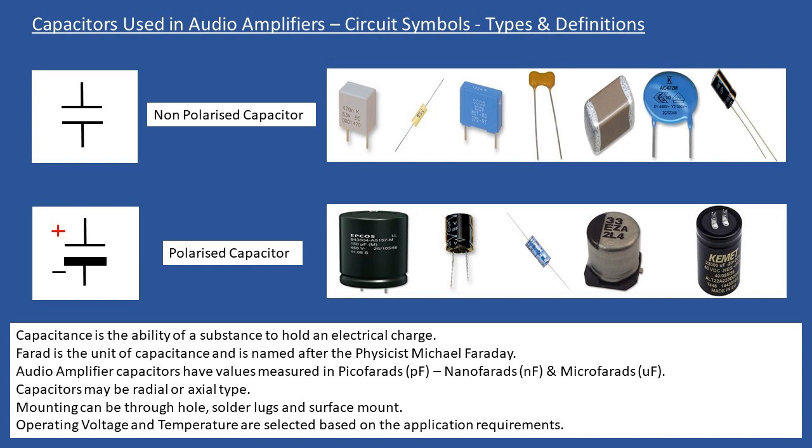Electrolytic capacitors are by design very good at removing low frequency noise. In power supply sections generating 100 Hz AC ripple after rectification, electrolytic capacitors remove that noise effectively. Ceramic disc capacitors at 100 nanofarads are very effective at removing high frequency noise, so you commonly find 100 nanofarad capacitors in both power supply and signal processing sections. Picofarad capacitors are more common in the signal processing area.